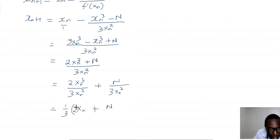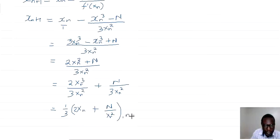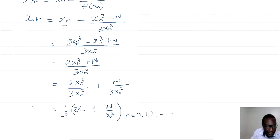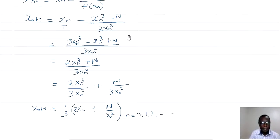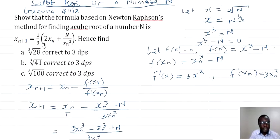We arrive at the formula: x(n+1) = (1/3) · (2xn + N/xn²), where n = 0, 1, 2, and so on. This is the formula for finding the cube root of any number based on Newton-Raphson's method.